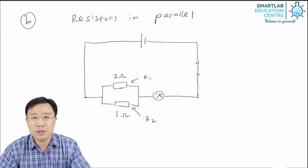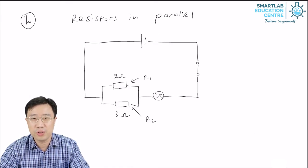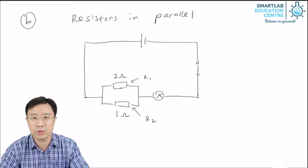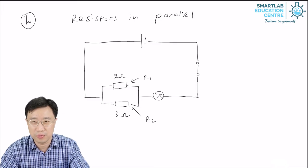Now this next circuit also has two resistors, the same two resistors, R1 and R2. But this time, they are arranged differently.